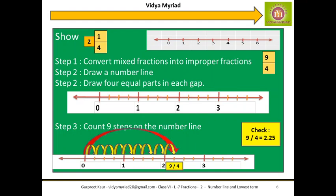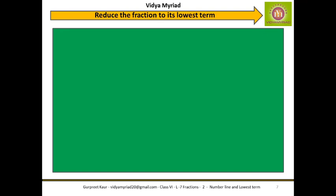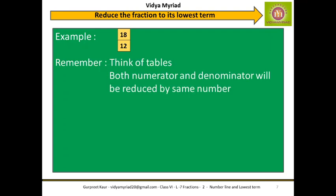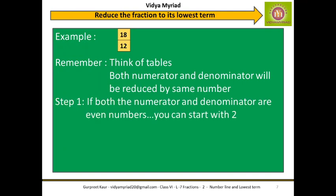Now let us begin with how we can reduce a fraction to its lowest term. Let's start with 18 by 12. Children, you must know your tables, because that will be the key here — it is going to be helpful in reducing both the numerator and denominator. The rule is: think of a table and both numerator and denominator will be divided by the same number. If both are even numbers, you can always start dividing by 2. Yes, 18 and 12 are even numbers, so I can simply start with 2.